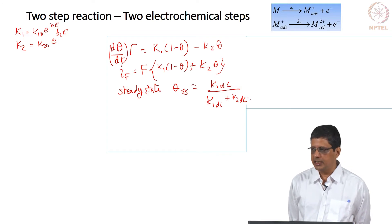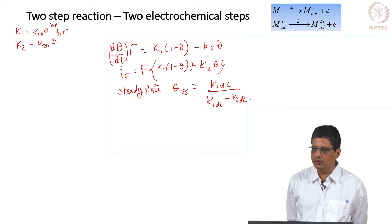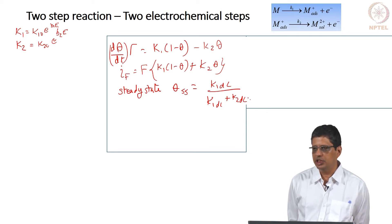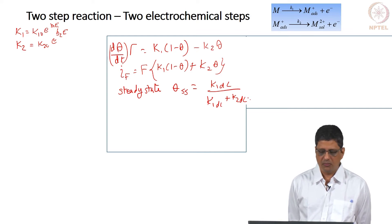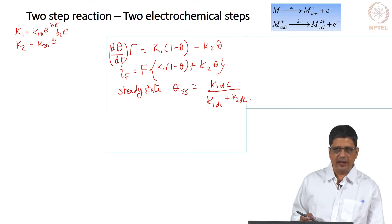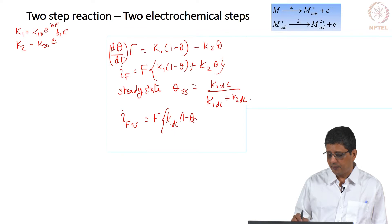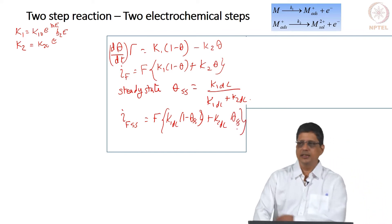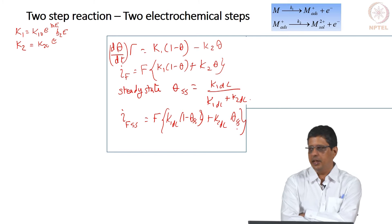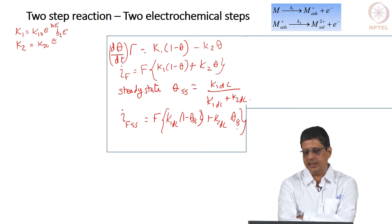You can get the expression for theta_SS. It looks similar, but k2 will keep changing with potential. Previously only k1 was changing, but in this example k2 will also keep changing. You can write the expression for faradaic current under steady-state conditions straightforwardly. All that you need to recognize is that potential is E_DC, k1 is k1_DC, k2 is k2_DC, and theta is theta_SS.